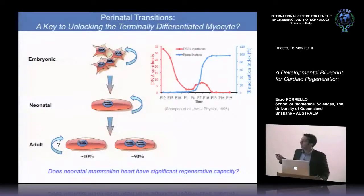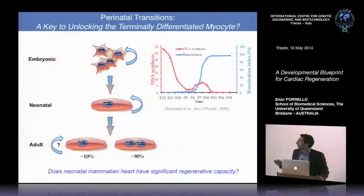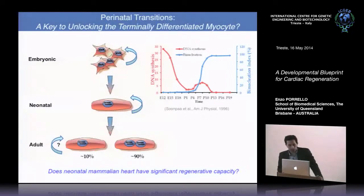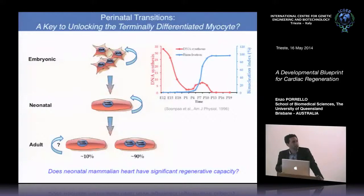Shortly after birth, there's a final round of DNA synthesis and karyokinesis — nuclear division occurring in the absence of cytokinesis — resulting in binucleation of the vast majority of rodent cardiomyocytes in the first two weeks after birth. We wondered whether the early postnatal heart, which contains predominantly mononucleated cells retaining proliferative potential, might also have significant cardiac regenerative potential.